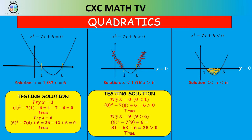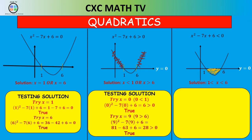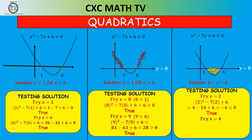Similarly, for the expression less than 0, the solution region is between 1 and 6. Trying x = 2 works out to be -4, which is less than 0. Trying x = 4 also gives -4, which is less than 0. All of these solutions are verified as true.